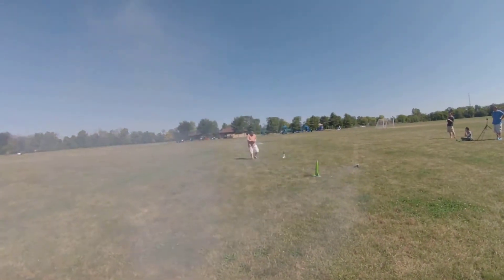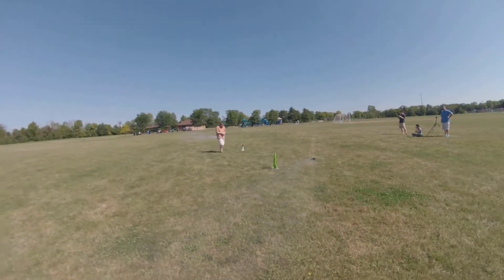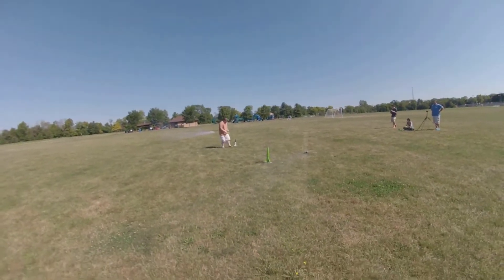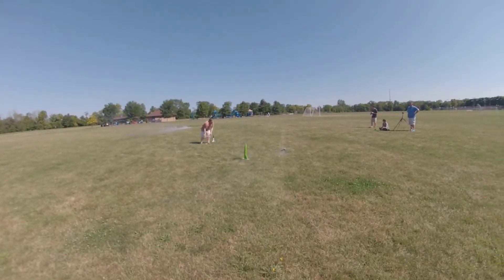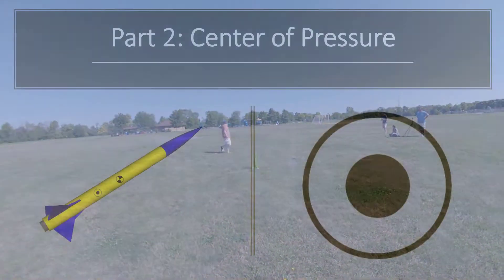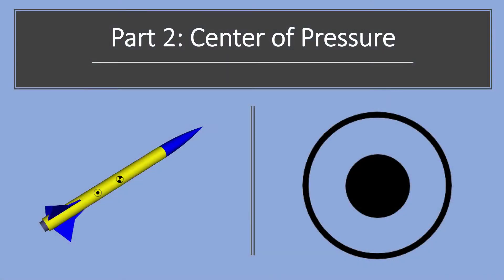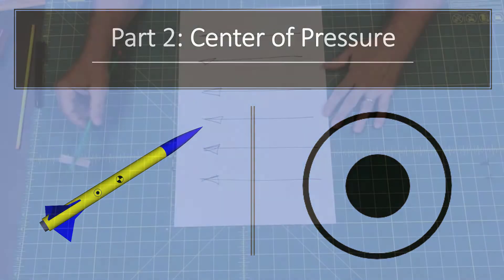That's not how we want our rockets to fly. In order to make our rockets fly true and straight, we need to understand the second concept of rocket stability: the center of pressure.